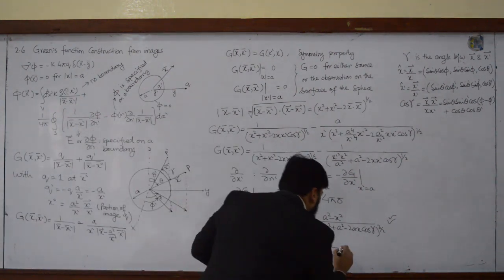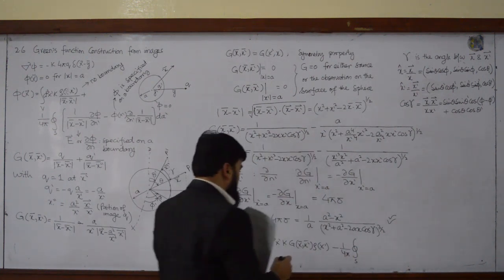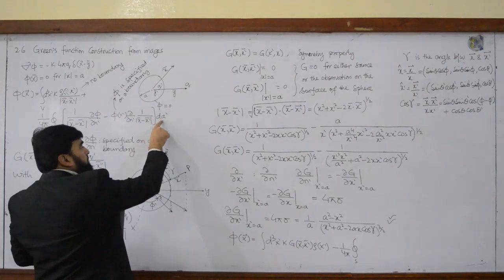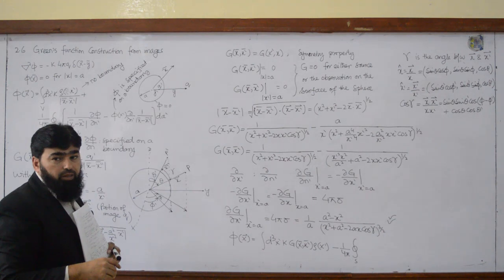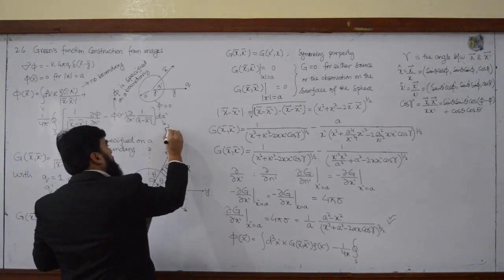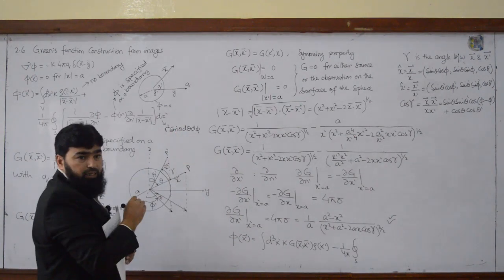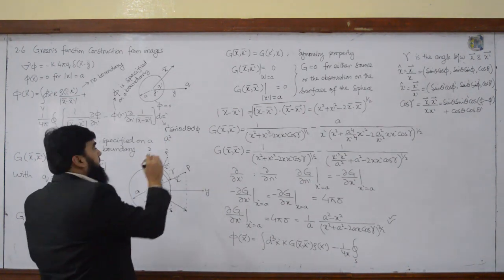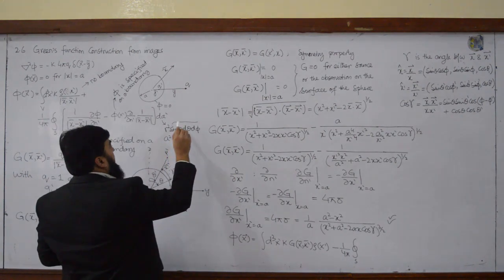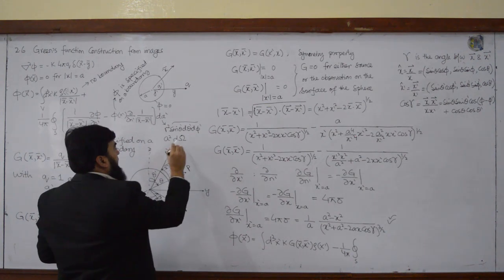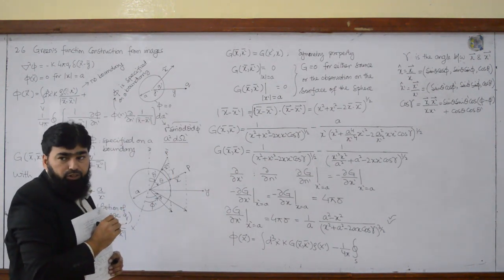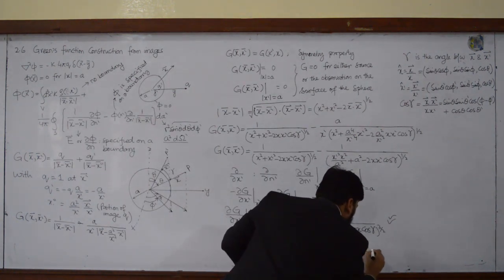What we found: the surface element dA' in spherical polar coordinates is r² sin θ dθ dφ, and since r equals a on the surface, it becomes a² sin θ dθ dφ, which we can write as a² dΩ' (the solid angle element). So the area element is a² dΩ'.